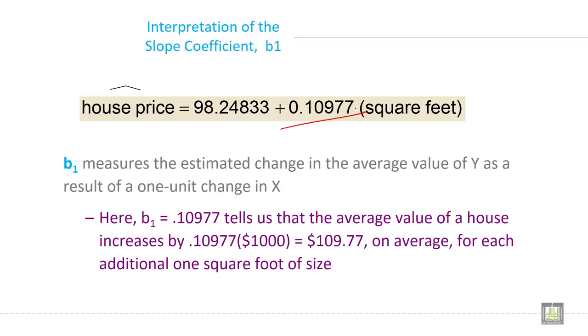Here b1 equals 0.10977 tells us that the average value of a house increases by 0.10977 times $1000, or $109.77 on average, for each additional one square foot of size. If you increase size by one square foot, then price will go up by $109.77.